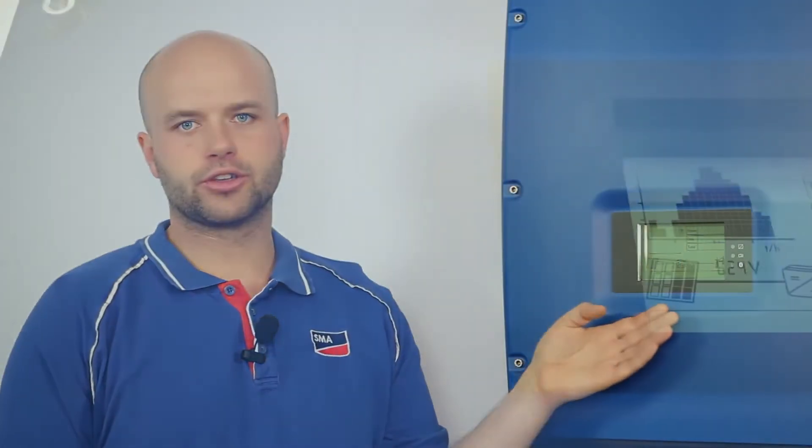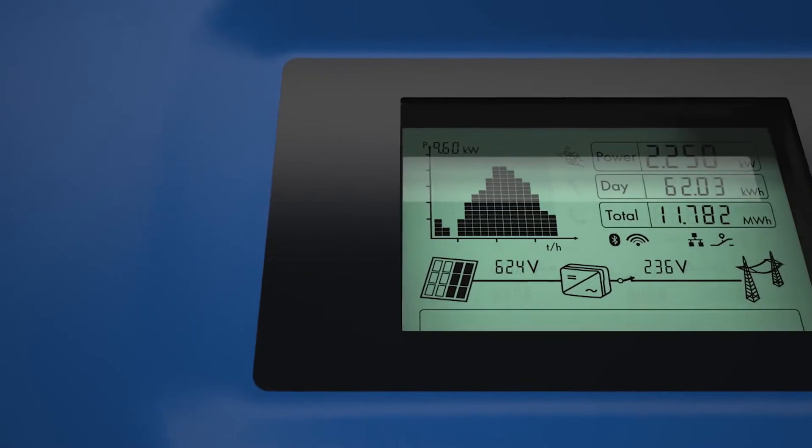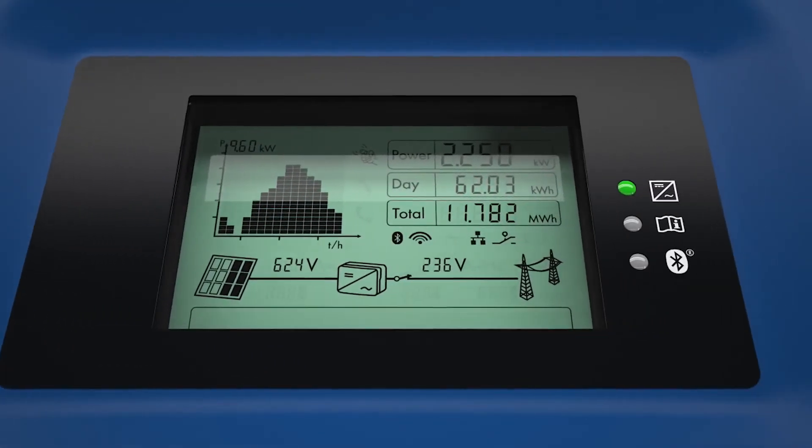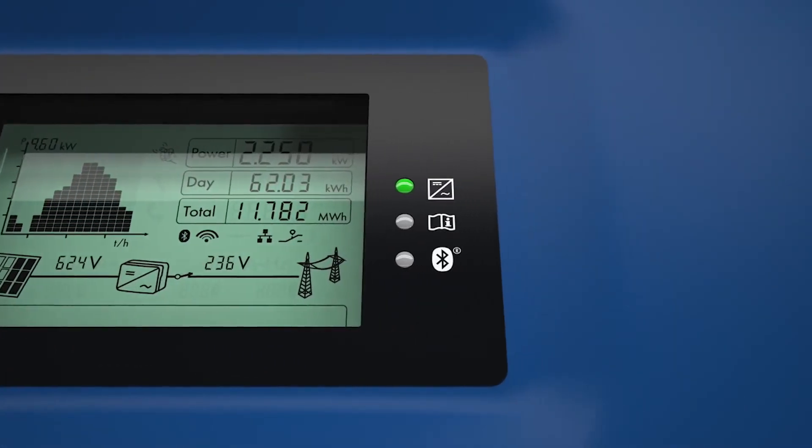The graphic display shows all the functions at a glance. For example, if WebConnect has established a communication to Sunny Portal, or if it is communicating to Bluetooth.